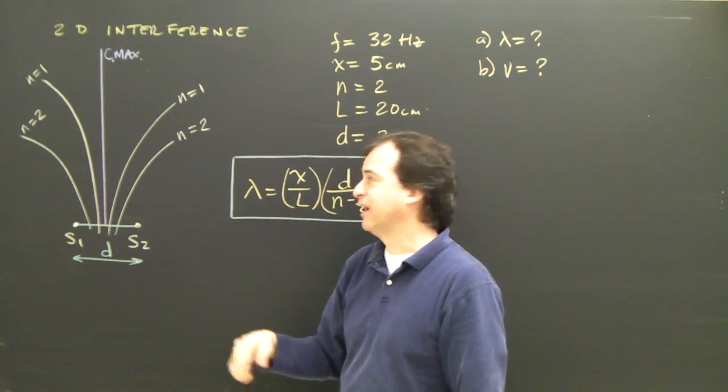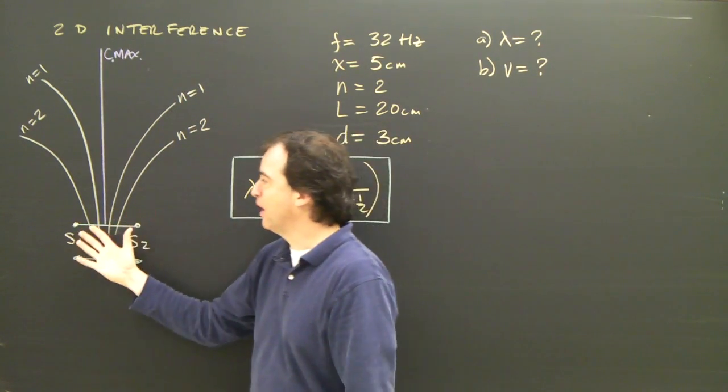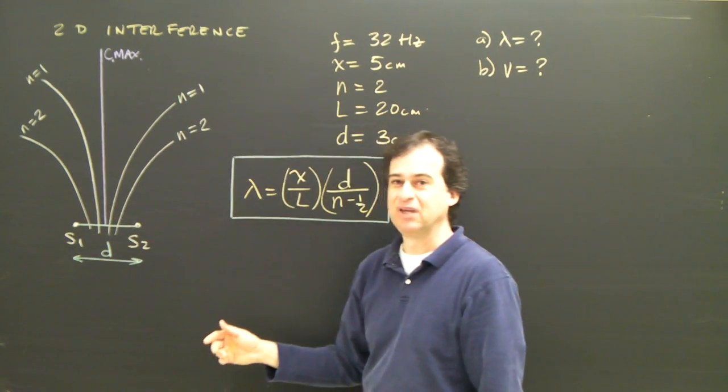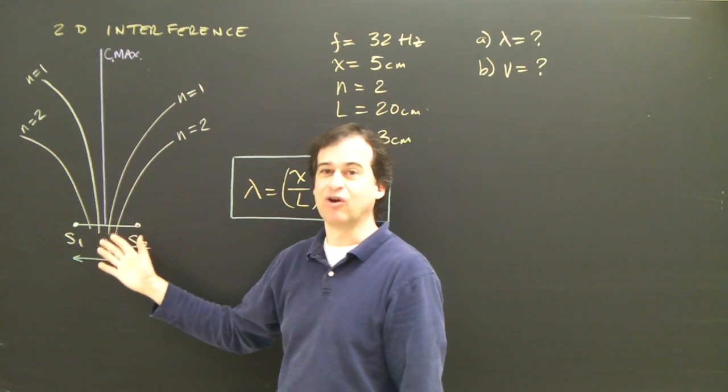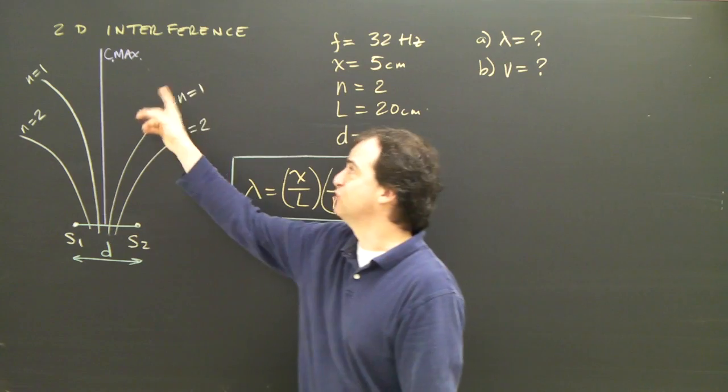And all we're looking at is these lines, the nodal lines, the places where in that pattern the water is very calm. Now we're only looking at minimums. There are formulas for maximums, but we're just doing the ones for minimums for 2D interference.